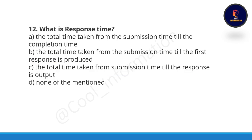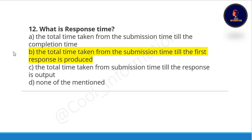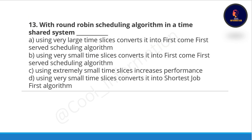The correct option for turnaround time is option D: the total time from the completion till the submission of the process. The next question: what is response time? Option A: the total time taken from submission time till completion time, option B: the total time taken from the submission time till the first response is produced, option C: the total time taken from submission till the response time is output, option D: none.